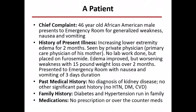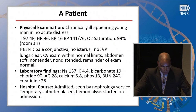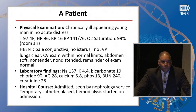In his past medical history, he had no history of kidney disease or other chronic diseases, but had a family history of diabetes and hypertension and took no medications. On physical exam, he was chronically ill-appearing with normal vital signs, notably a blood pressure of 141 over 76. His laboratory examination was remarkable: bicarbonate of 19, anion gap of 28, calcium of 5.8, phosphorus of 13, and a high BUN and creatinine of 240 and 28. He was admitted, a temporary catheter was placed, and he was immediately started on hemodialysis.